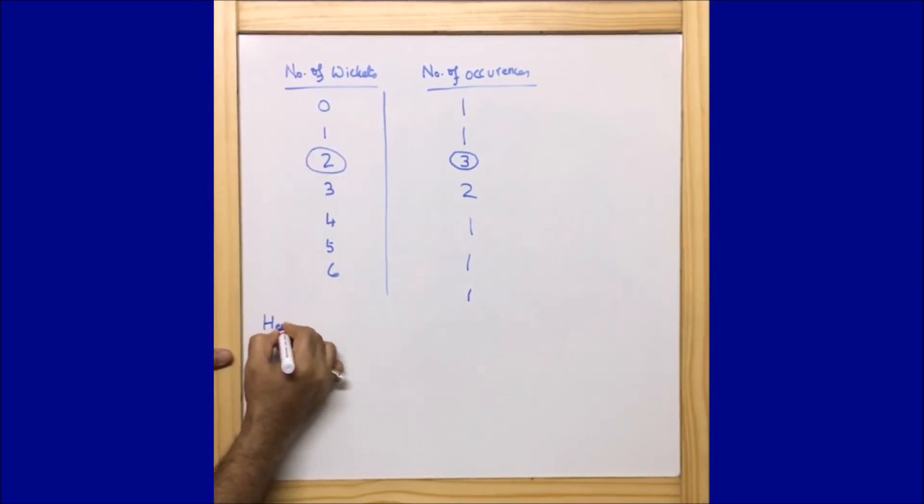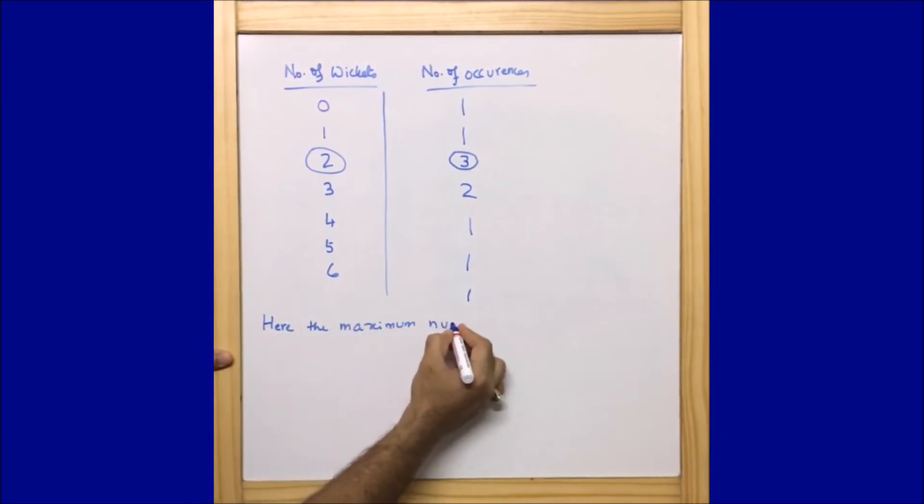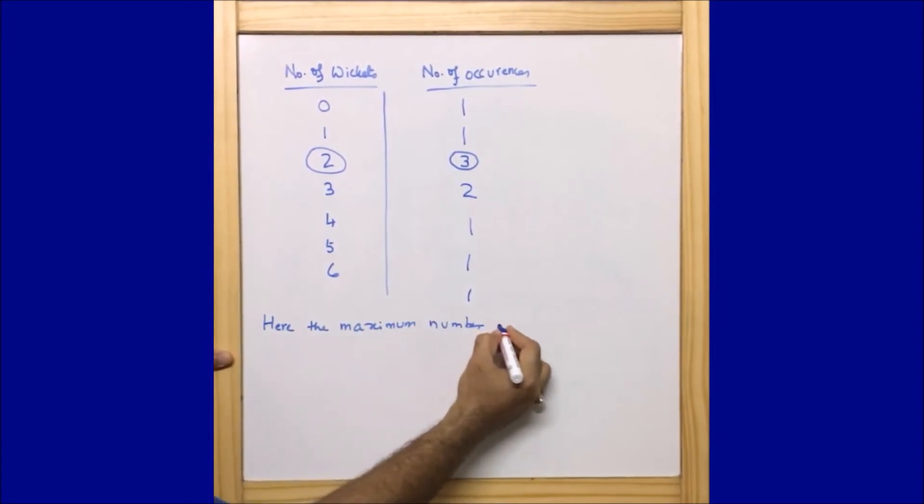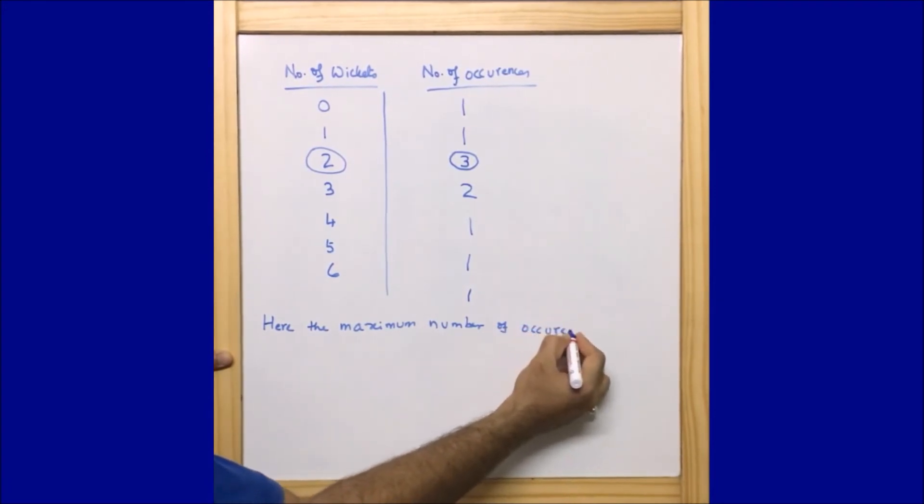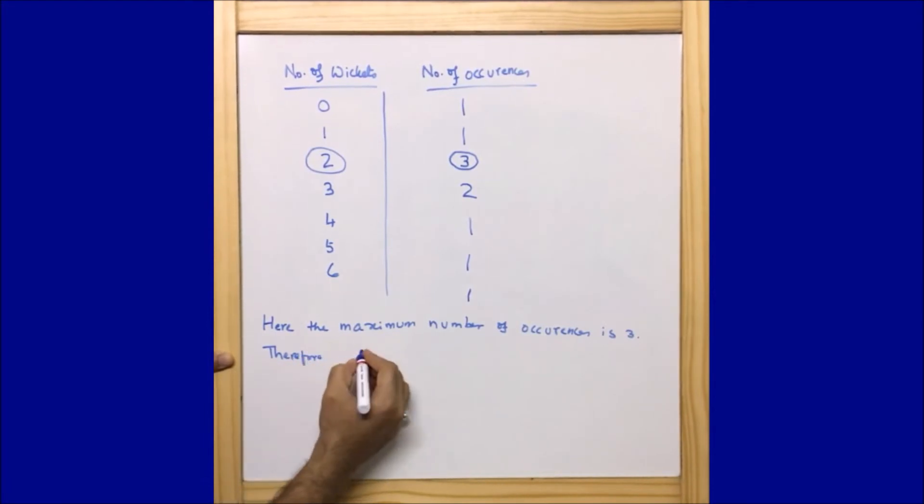So we can write here the maximum number of occurrences is three. Therefore, therefore we can say that the mode is two.